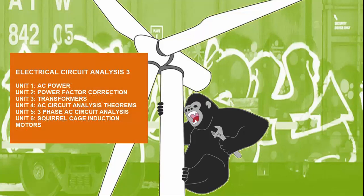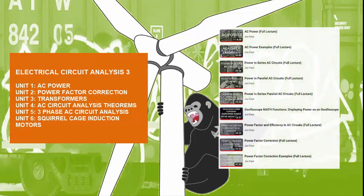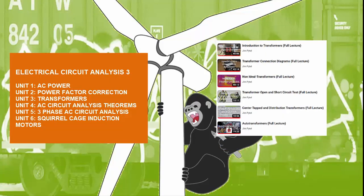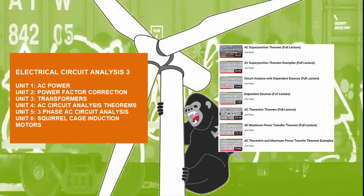The last third of the electrical circuit analysis series starts off with an examination of AC power, including apparent, real, and reactive components, as well as power factor correction. Next, the series examines an incredibly useful device known as the transformer. The series then moves on to discuss important AC circuit analysis techniques and theorems like the AC superposition theorem, AC Thevenin's theorem, and the AC maximum power transfer theorem.